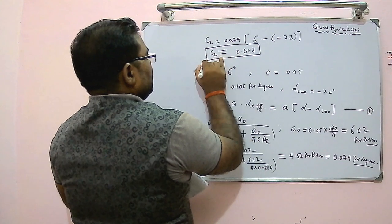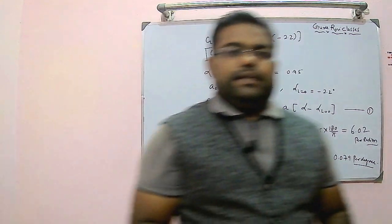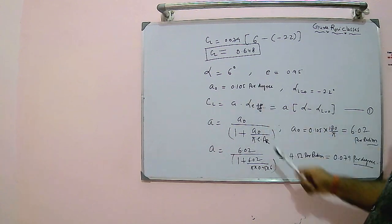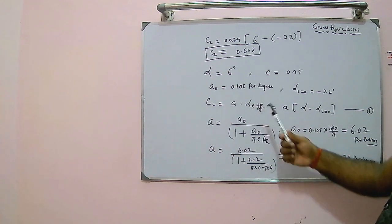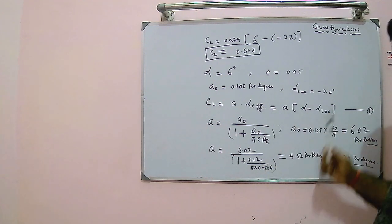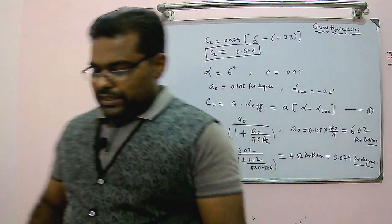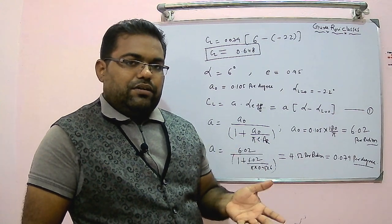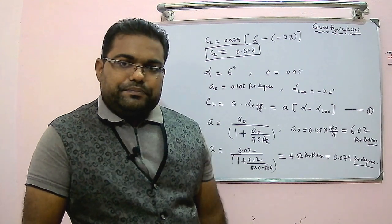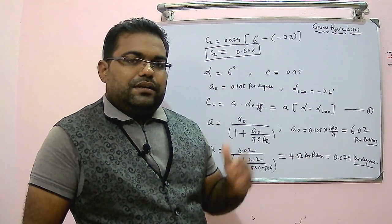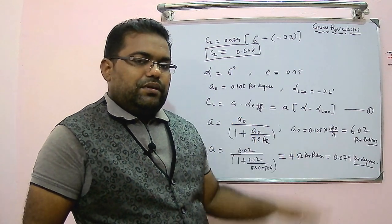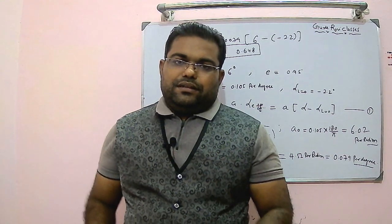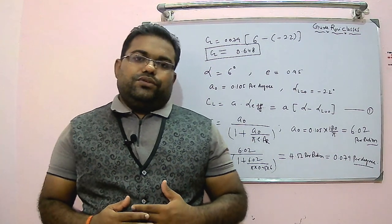So the coefficient of lift is approximately 0.648 for the given data. You can solve similar problems — sometimes a0 is given to find a, and other times a is given to find a0. With this I am closing today's discussion. We covered the difference between the airfoil and wing, two-dimensional versus three-dimensional wings, finite versus infinite wings, Mach number, critical Mach number, drag divergence Mach number, and solved a numerical problem. In the next class we will derive expressions for lift and drag coefficient using dimensional analysis. Thank you and have a nice day.